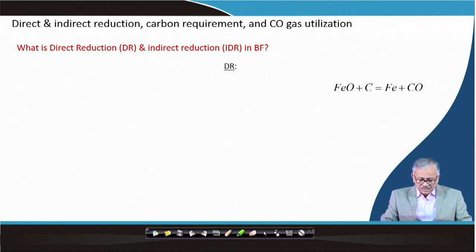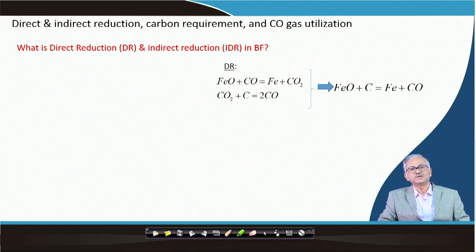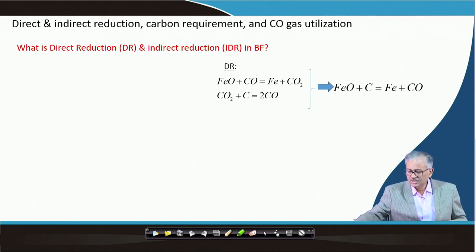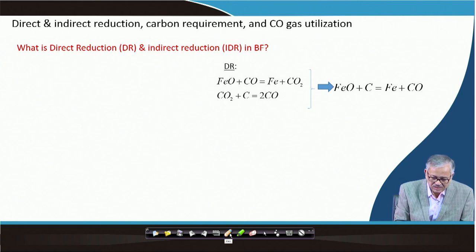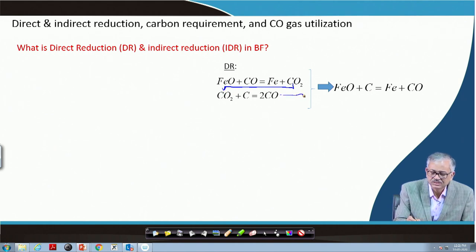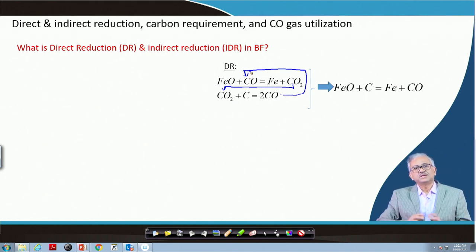This reaction is basically a combination of two other reactions. First, FeO reacts with CO to form Fe and CO₂. Then whatever CO₂ is generated gasifies the carbon to carbon monoxide. That CO is again used for the reduction. So whatever CO₂ is generated comes back, and whatever CO is generated is used — this is the way the reaction continues.